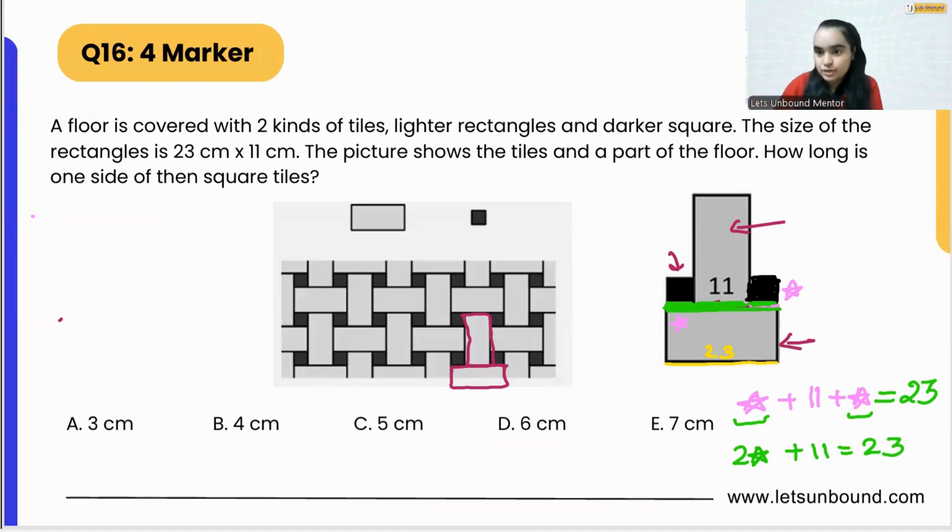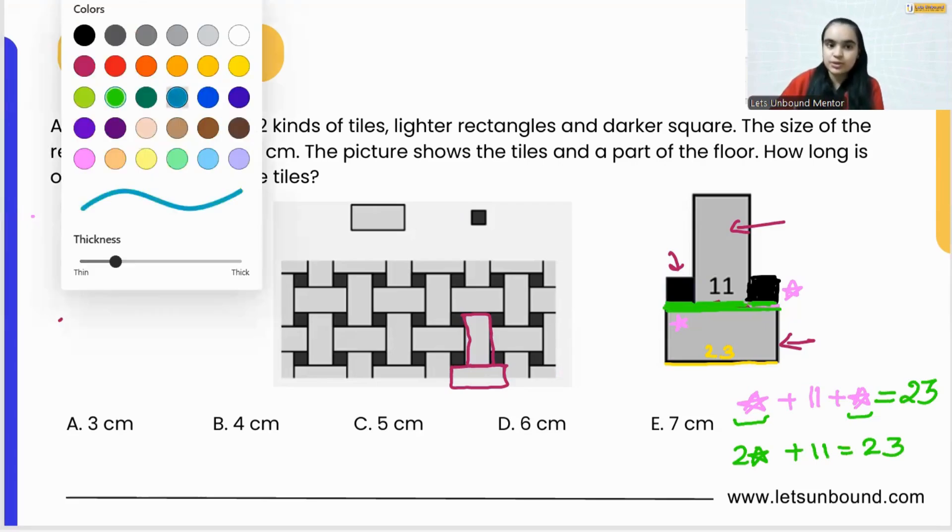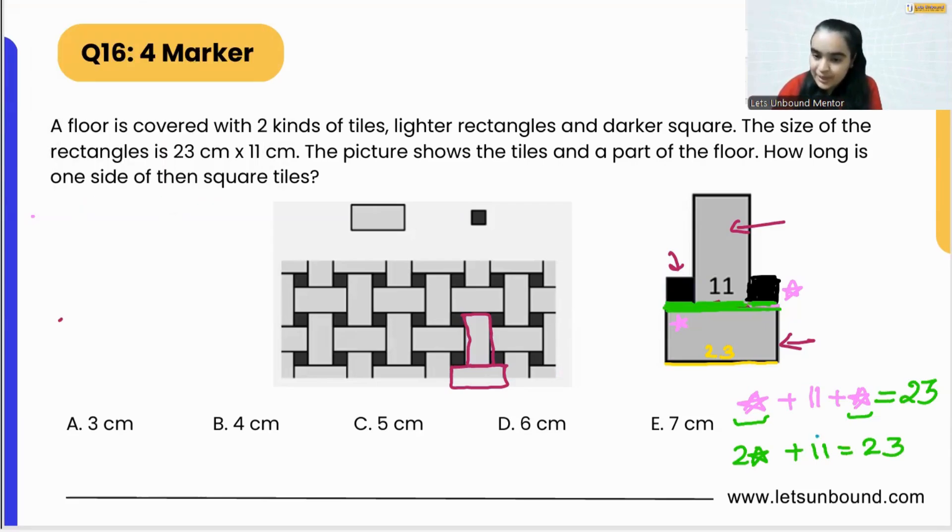From here we need to find out what is going to be the value of this star. What we can do is subtract both sides by 11. So what will happen? From here it will vanish. 11 minus 11 is 0, so we are left with two stars equals 23 minus 11, that is actually 12.